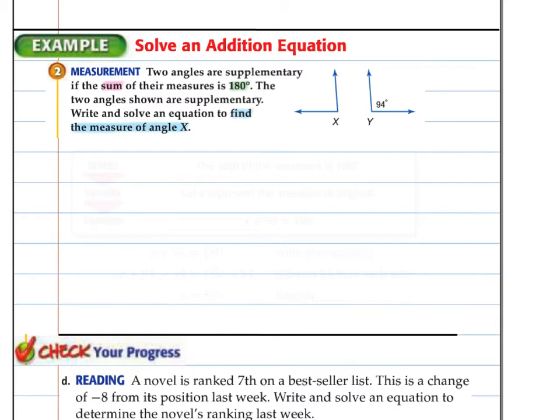So another example, this word problem says, two angles are supplementary if the sum of the measures is 180. The two angles shown are supplementary. So it says this angle and this angle are supplementary, meaning they add to 190. So we want to write an equation to find the measure of angle x. So I continue and I'm going to set this up. So the sum of the measures is 180, that's what I know. Let x represent the value of the angle.